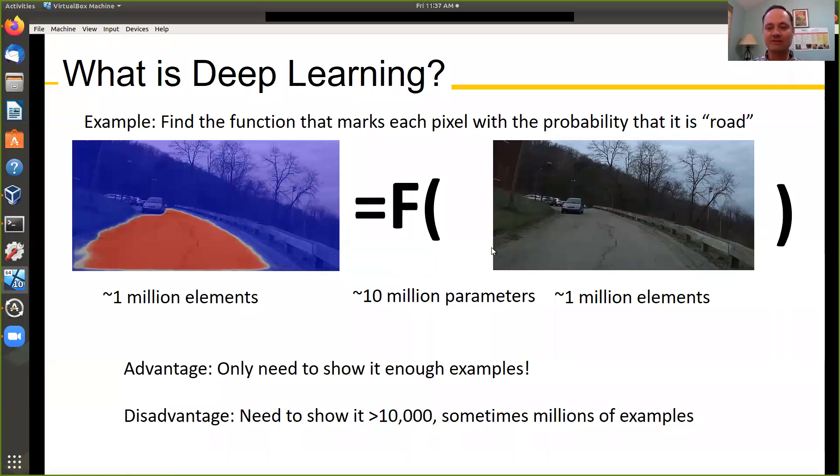The great advantage is it can learn this function when you show it a lot of examples. So you show a lot of examples and say, in this image the road is here, in this next image the road is here. You don't have to understand anything on how the image was taken. You just give it examples and it learns it.